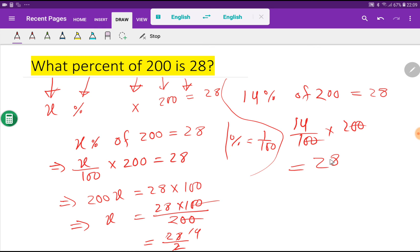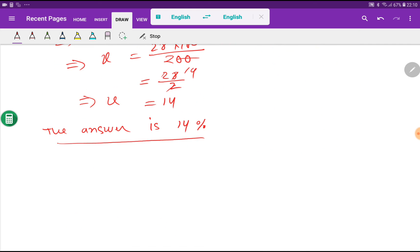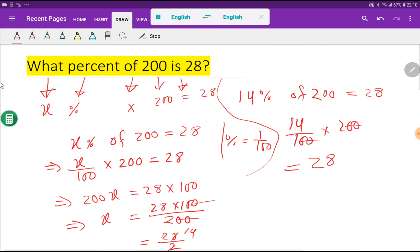In the left hand side we are getting 28, and in the right hand side also we have 28. So our answer, our answer 14 percent is correct. So this is the correct answer. 14 percent of 200 equal to 28.